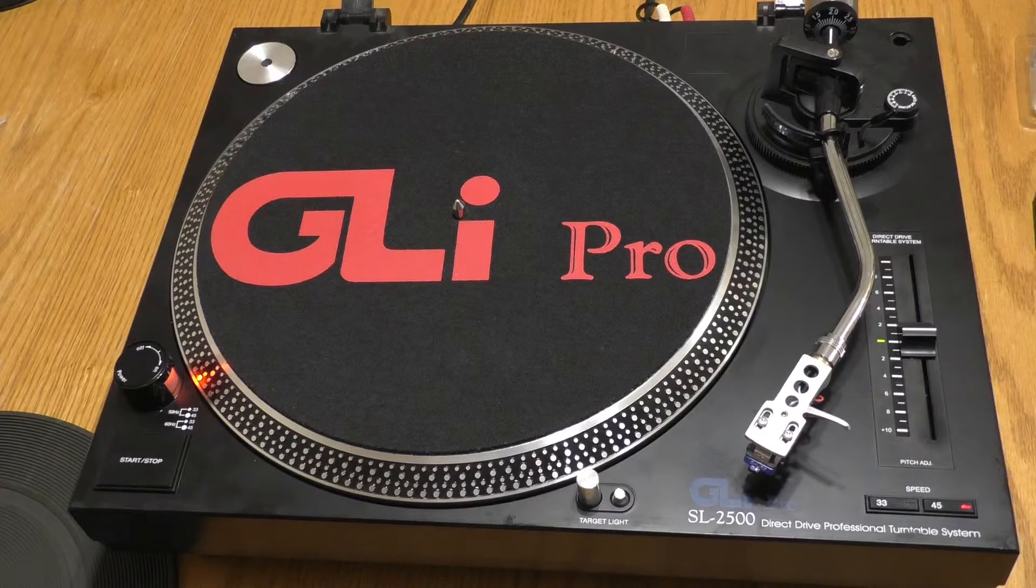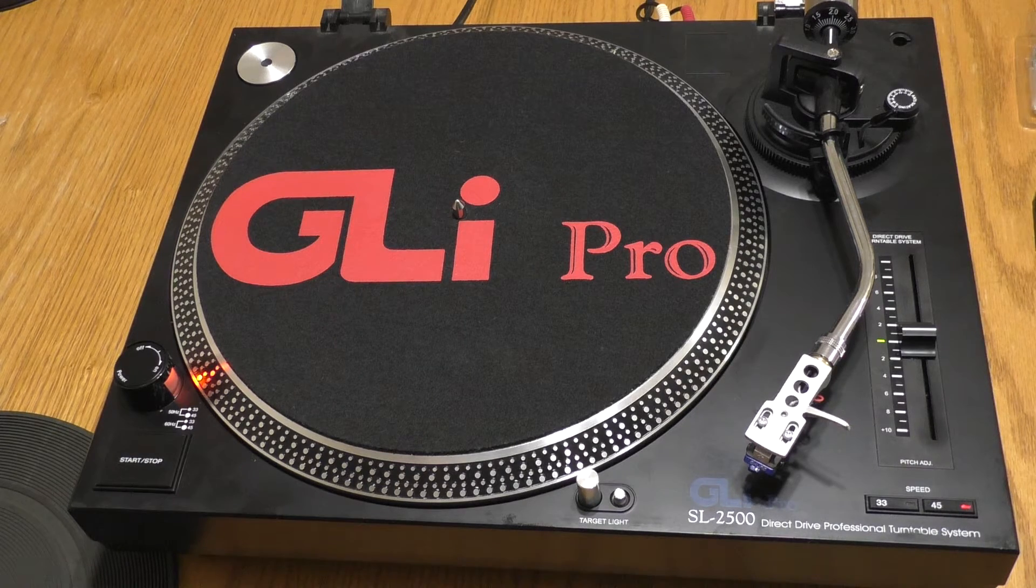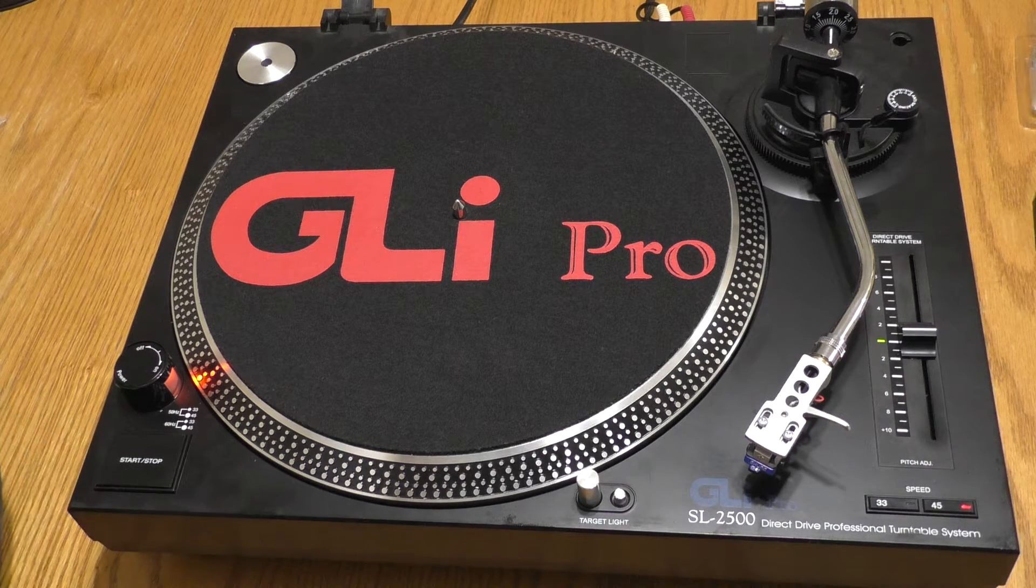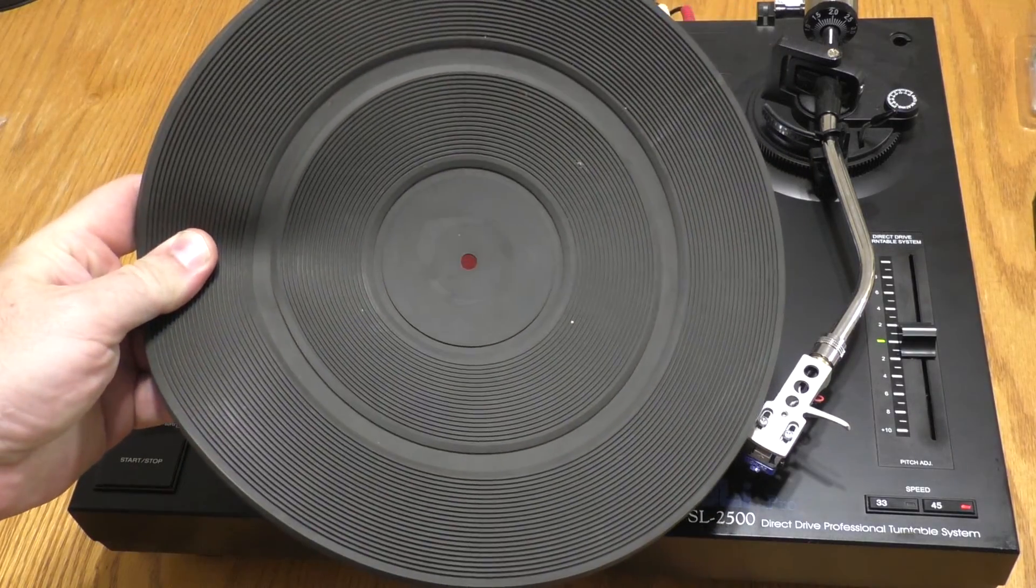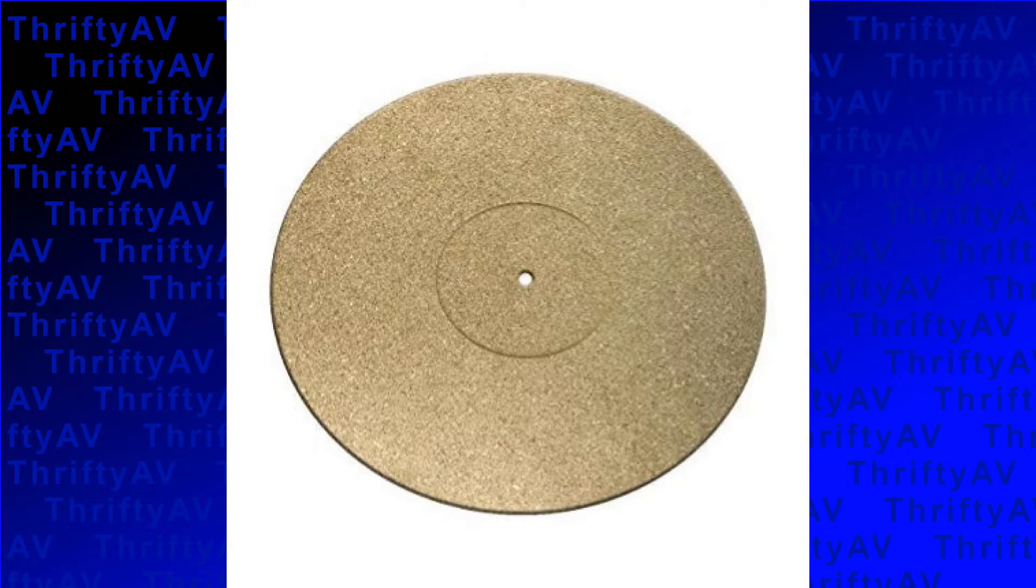There are three popular types of turntable mats. A felt mat came with my GLI Pro SL2500 and this design is often preferred by DJs. But dust can easily collect on the mat and end up on your vinyl. My favorite is this old rubber mat that came with a Pioneer turntable that I no longer own. A third type of mat that is popular for its vibration dampening properties is a cork mat.